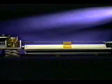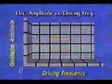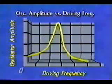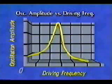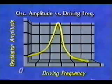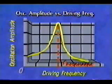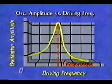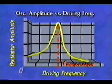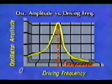At frequencies significantly above the resonance frequency, the glider shows virtually no response to the driving force. A graph of oscillation amplitude versus driving frequency can be used to summarize these results — the vibrational amplitude rises sharply as the driving frequency approaches the resonant frequency from either side.